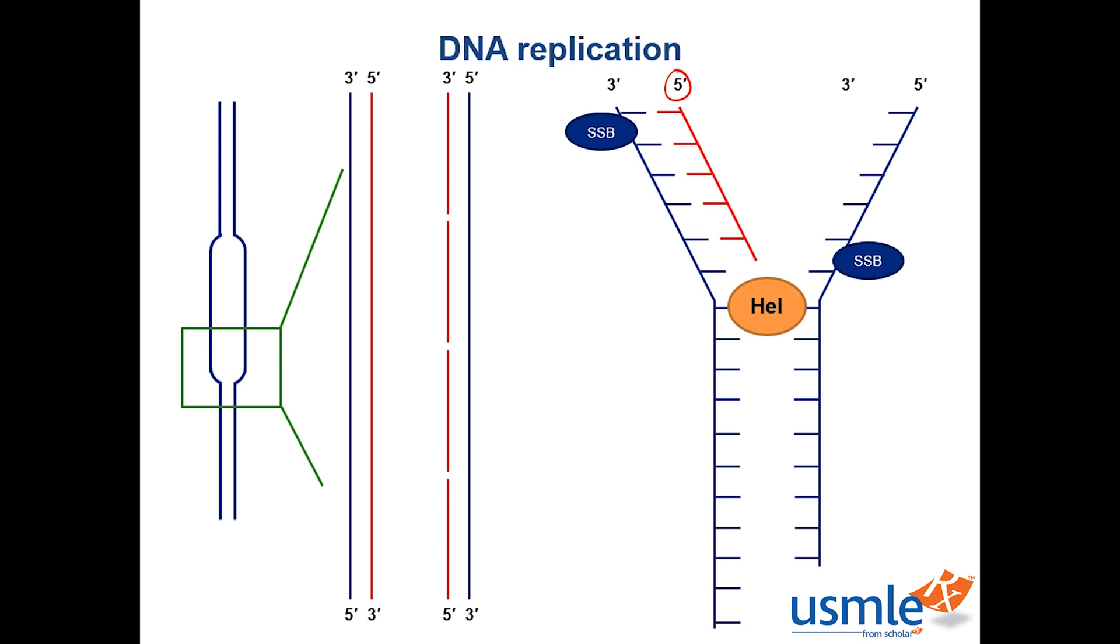Prokaryotes have three DNA polymerases: DNA polymerase 1, 2, and 3. These are the ones that will most likely be tested on, which makes sense since we can easily use a prokaryote model, such as E. coli, to study their DNA replication process.